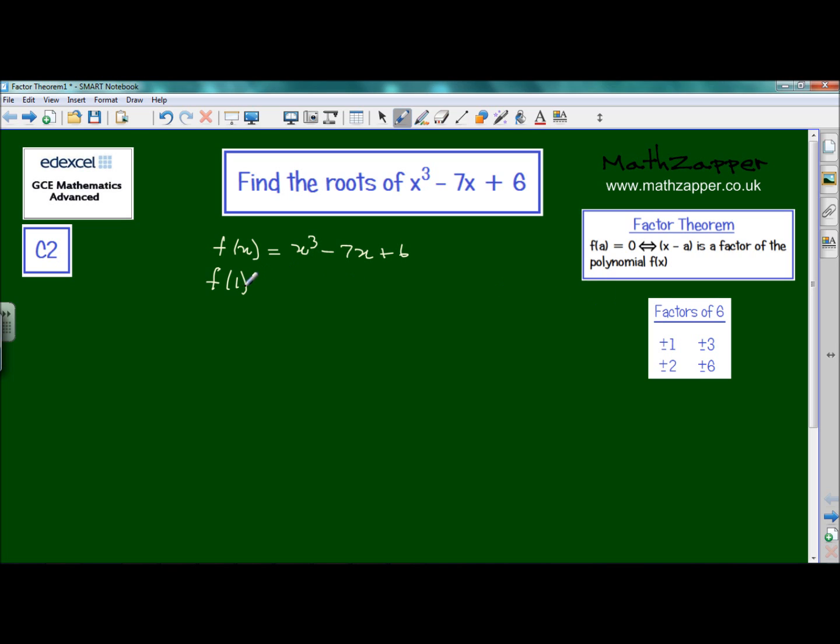Well, we've chosen for our value of a, 1. And if 1 gives us an answer 0, then (x - 1) will be a factor. So let's see how we get on with f(1). 1 replaces x, so 1³ is 1, minus 7 × 1 is -7, plus 6. And that does indeed give the answer 0.